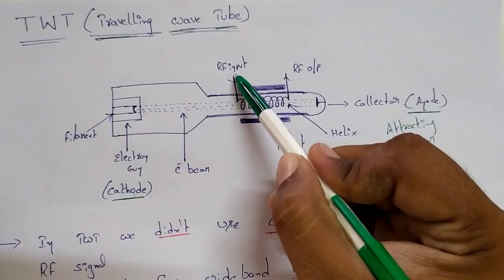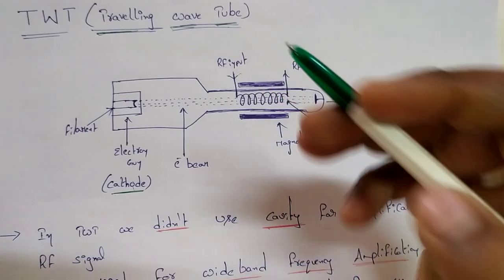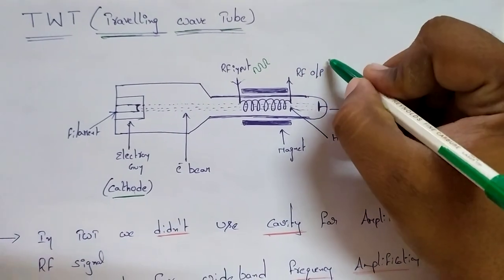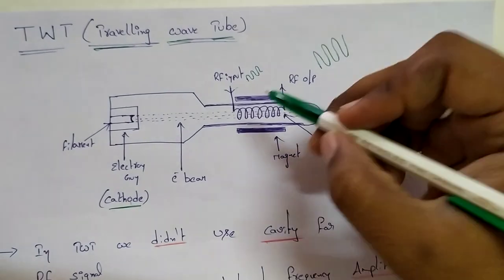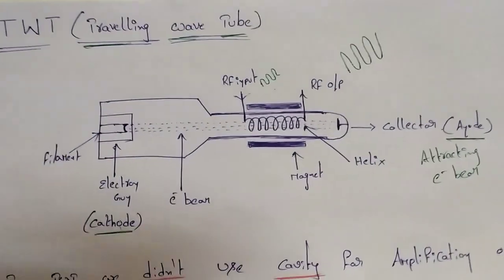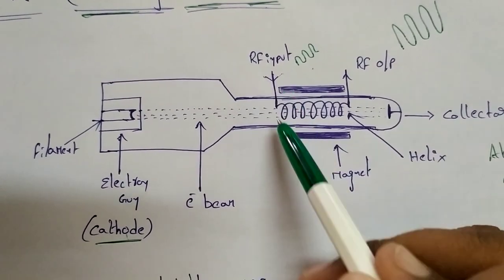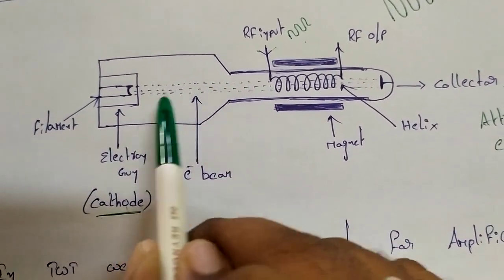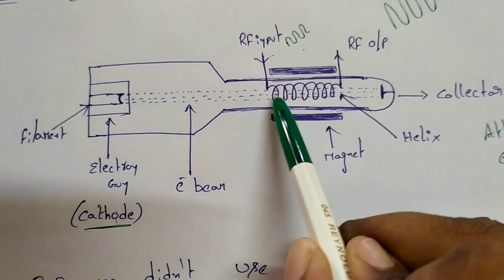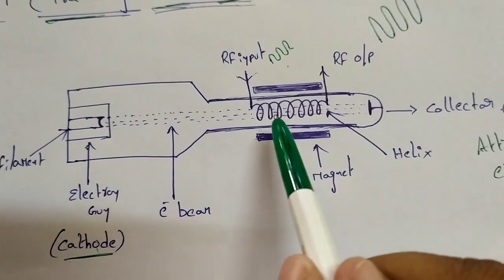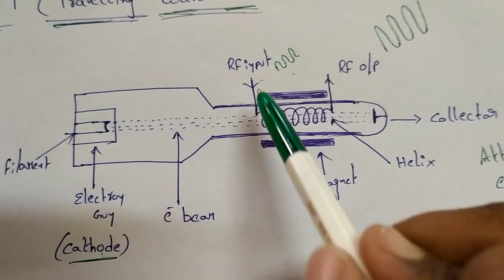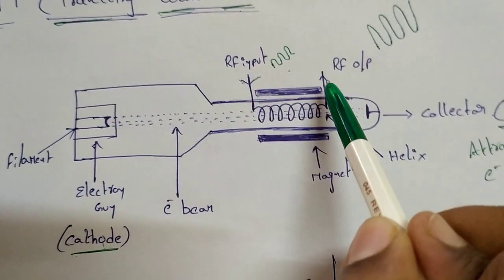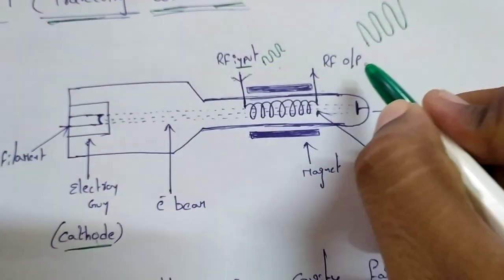We have to collect the RF input signal. We place a helix wire and an amplifier at the output. We place this output — here is the setup. You can see the RF input, R1, and output.